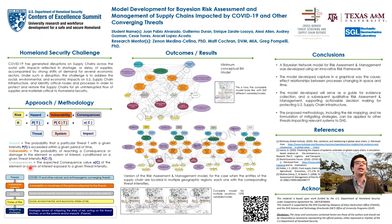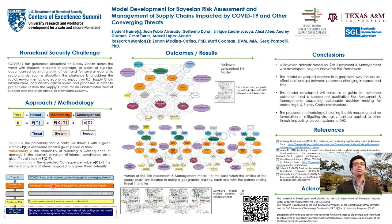The model development starts with the identification of variables and processes describing the threats, such as COVID-19, but also other natural and anthropogenic threats, followed by the identification of variables and processes that describe the systems vulnerable to the threats, and also variables and processes related to the impacts and subsequent states of risk caused on the systems by the action of the threats, being those social, environmental, or economic in nature. These three components are required for risk assessment.